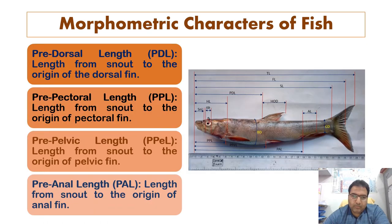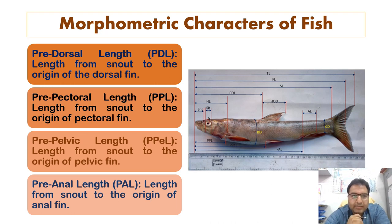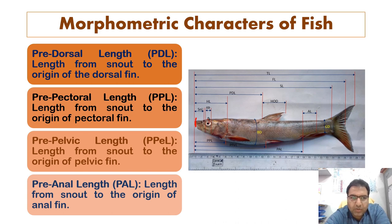There are many more characters which can be measured, such as pre-dorsal length, denoted PDL. It is the length from the snout to the origin of the dorsal fin. So from the tip of the snout to the origin of the dorsal fin is called the PDL or pre-dorsal length.